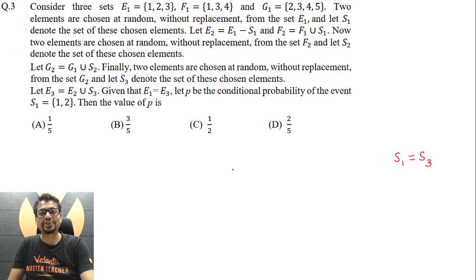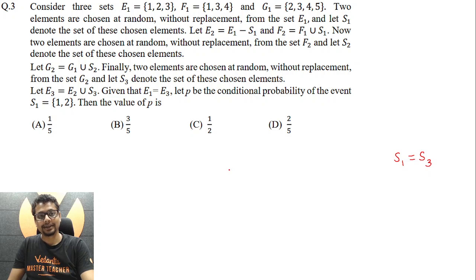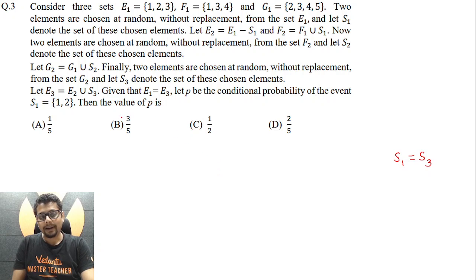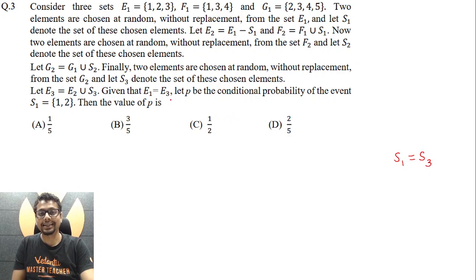Now this question is about conditional probability. Given that E1 is equal to E3, what is the conditional probability that S1 has elements 1 and 2? This is essentially: probability that S1 has elements 1 and 2 AND E1 equals E3, divided by probability that E1 equals E3. So first, let's find the probability that E1 is equal to E3.